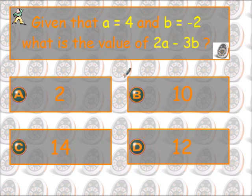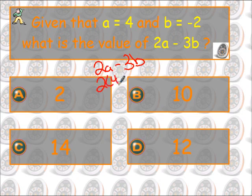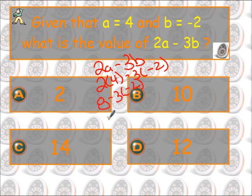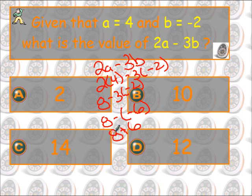Alright, let's look at this one — we've got 2a minus 3b. a was 4, b was negative 2. So this gives me 2 times 4 is 8, minus 3 times negative 2. 3 times negative 2 is negative 6. We can do keep-change-opposite: 8 stays the same, minus becomes plus, opposite of negative 6 is 6. So 8 plus 6 is 14.